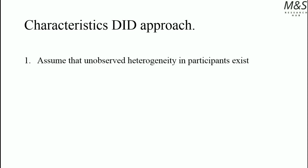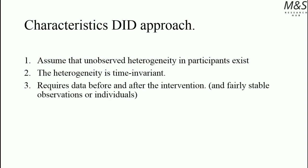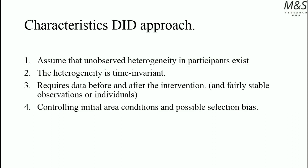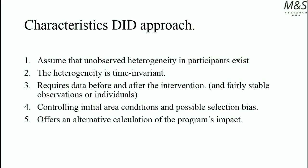Regarding the characteristics of the Difference-in-Difference Approach: it is assumed that observable heterogeneity among participants exists, and that heterogeneity is time-invariant. It requires data before and after the intervention. This data has to be fairly stable between observations or individuals. It controls for initial area conditions and possible selection bias, taking into consideration observable characteristics and specific variables of the individuals. The Difference-in-Difference Approach offers an alternative calculation of the program's impact, which is different from propensity score matching, for example.